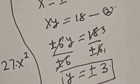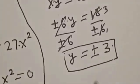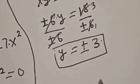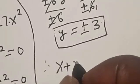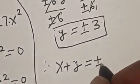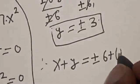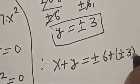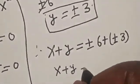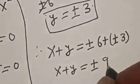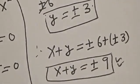We've found x equals plus or minus 6 and y equals plus or minus 3. The question asks for the value of x plus y. Therefore, x plus y equals plus or minus 6 plus plus or minus 3, which gives x plus y equals plus or minus 9. That is our final answer. If you enjoyed the class, please don't forget to like, share, comment, and subscribe.